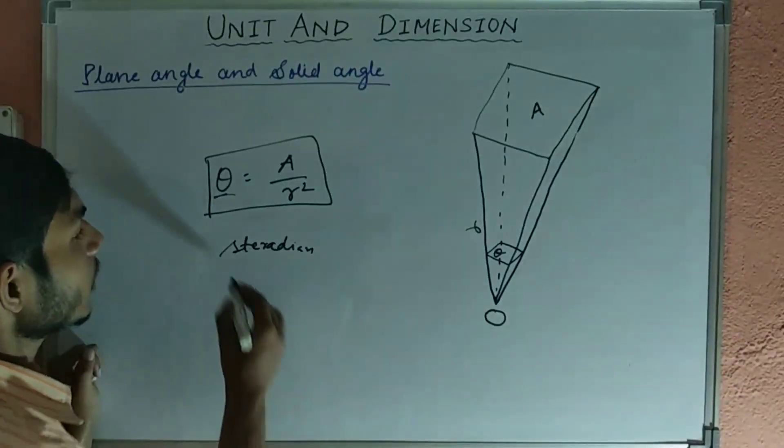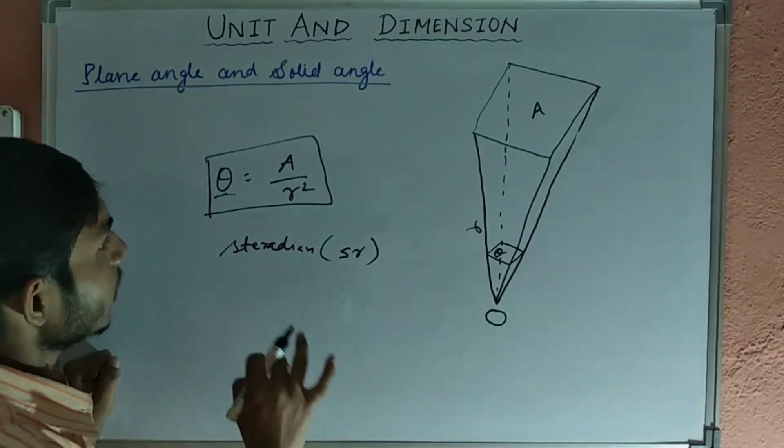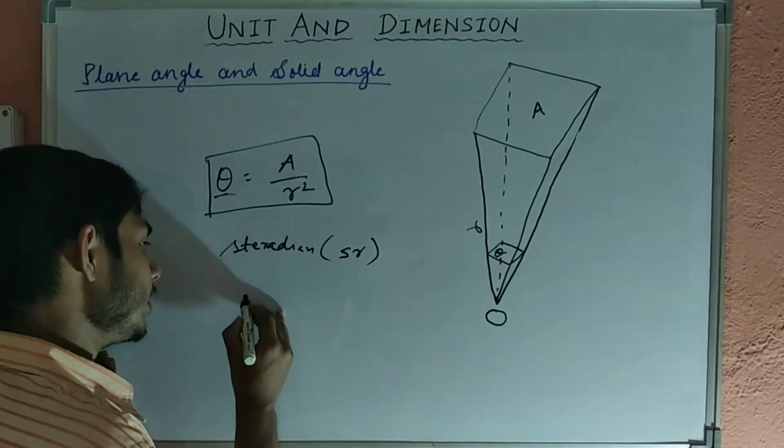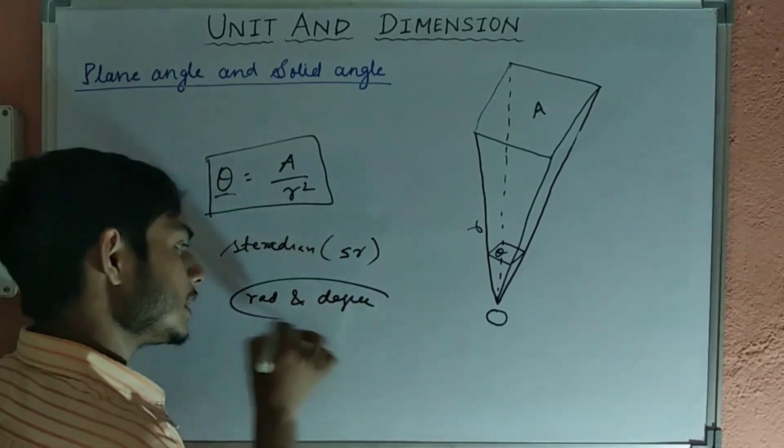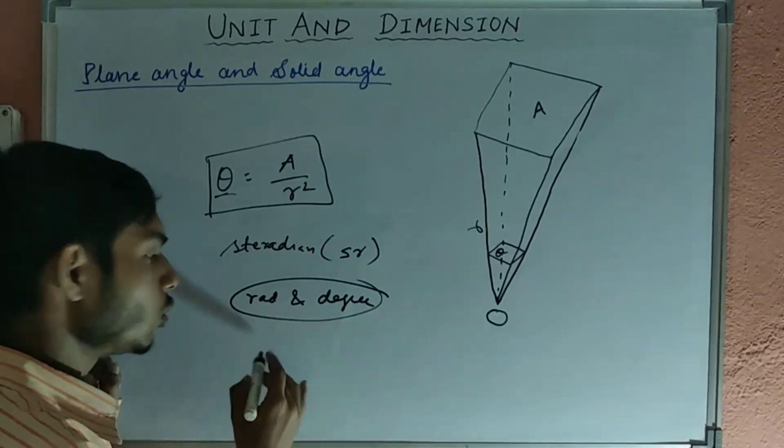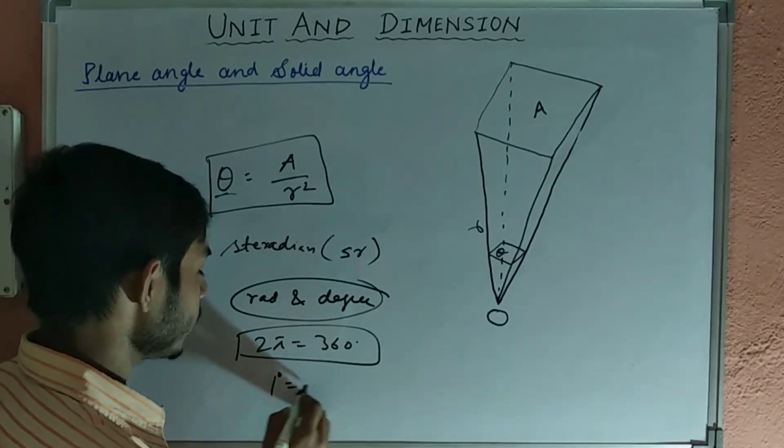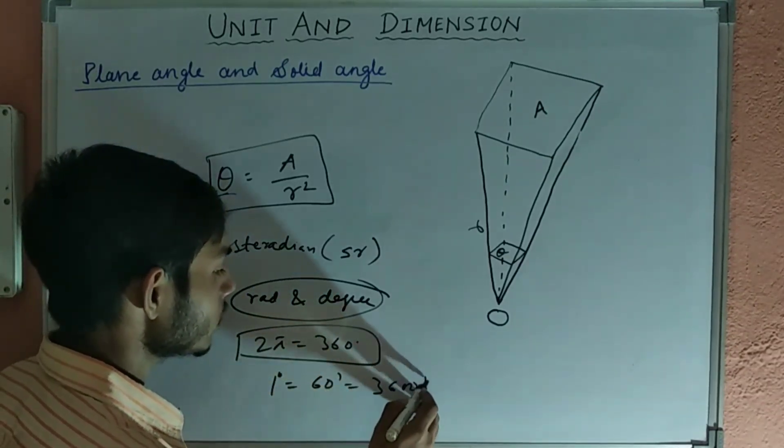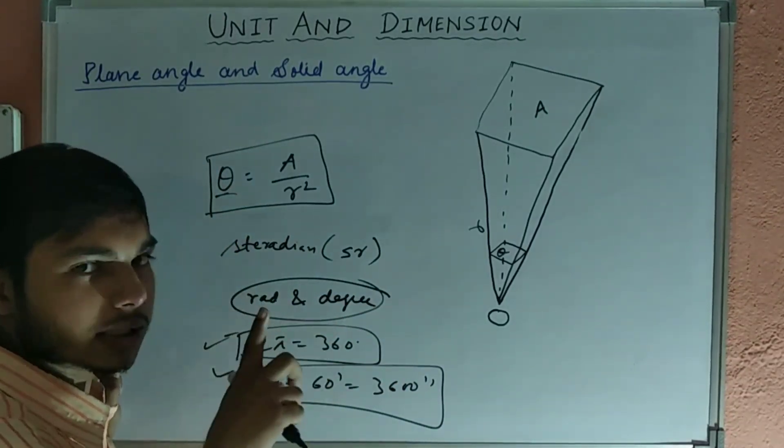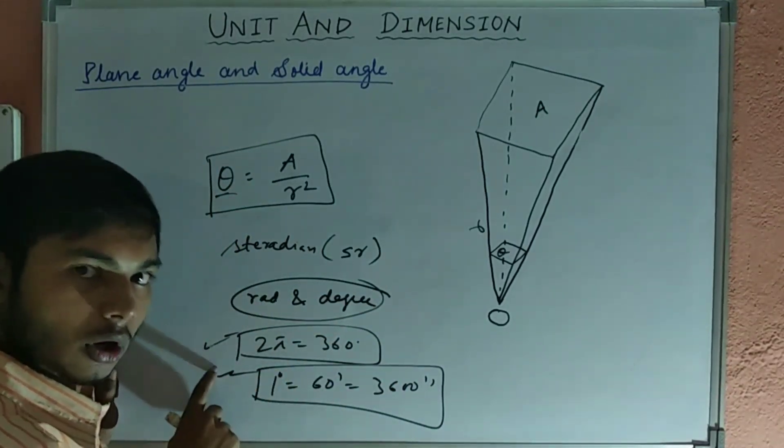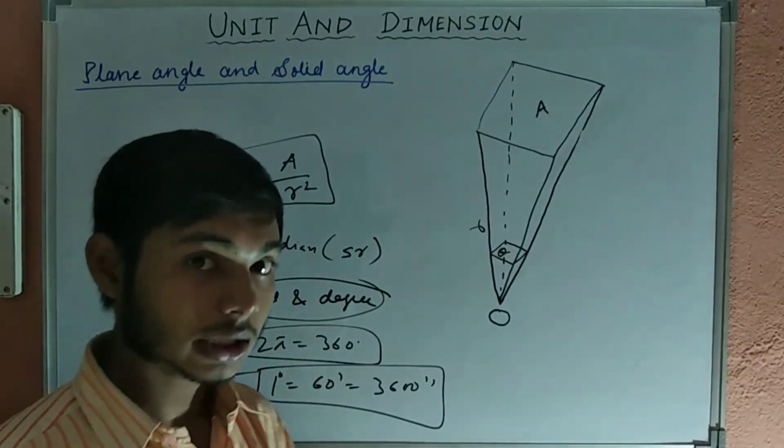Now, this can be written as small s and small r. I have already told you the relation between the radian and degree. Same will be here also. 2 pi radian equal to 360 degrees. And 1 degree equal to 60 minutes equal to 3600 seconds. These two relations, please keep in mind, all physics, you will use these two. So, this was all about the plane angle and solid angle.